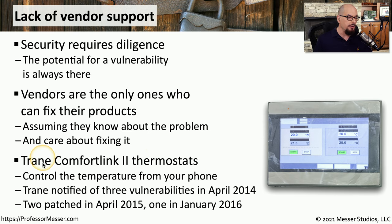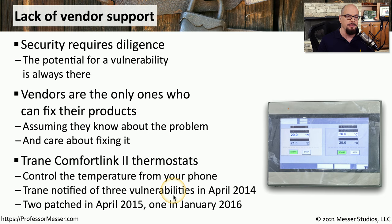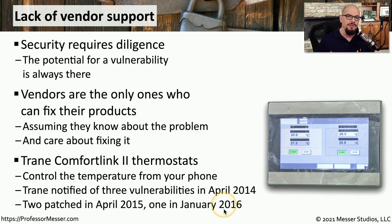For example, we can look at the situation that occurred with Trane ComfortLink thermostats. These are thermostats that can be remotely managed and maintained. Trane was notified in April of 2014 that there were three security vulnerabilities associated with these thermostats, but it took a long time to have Trane finally resolve these particular vulnerabilities. Two of these were patched in April of 2015, a year later, and another one in January 2016 — almost two years after these vulnerabilities were identified. These are the types of security issues that we rely on our vendors to resolve, and we can't make these changes ourselves. So you have to make sure that you partner with vendors that will be aware of these problems and able to react to them quickly.